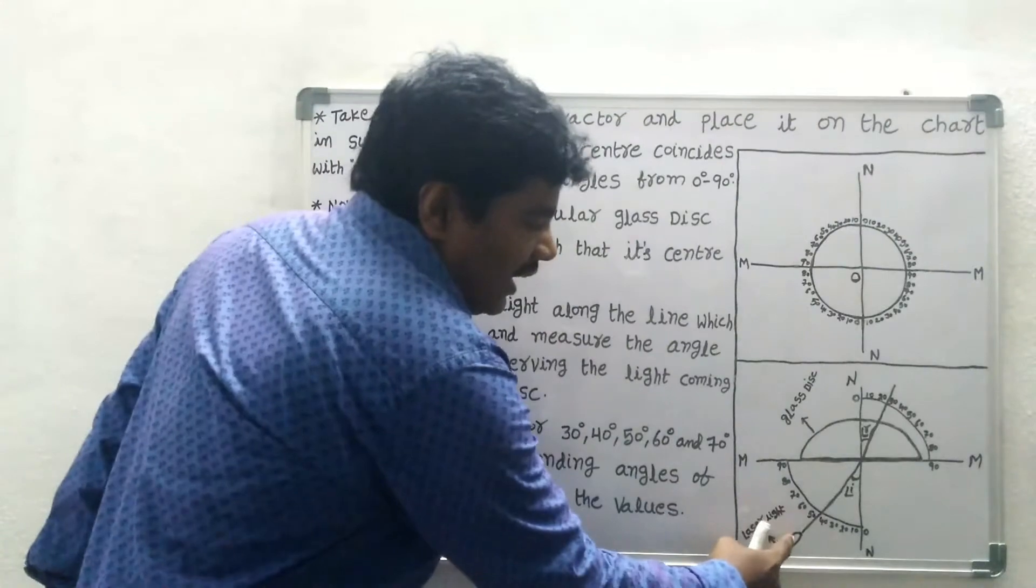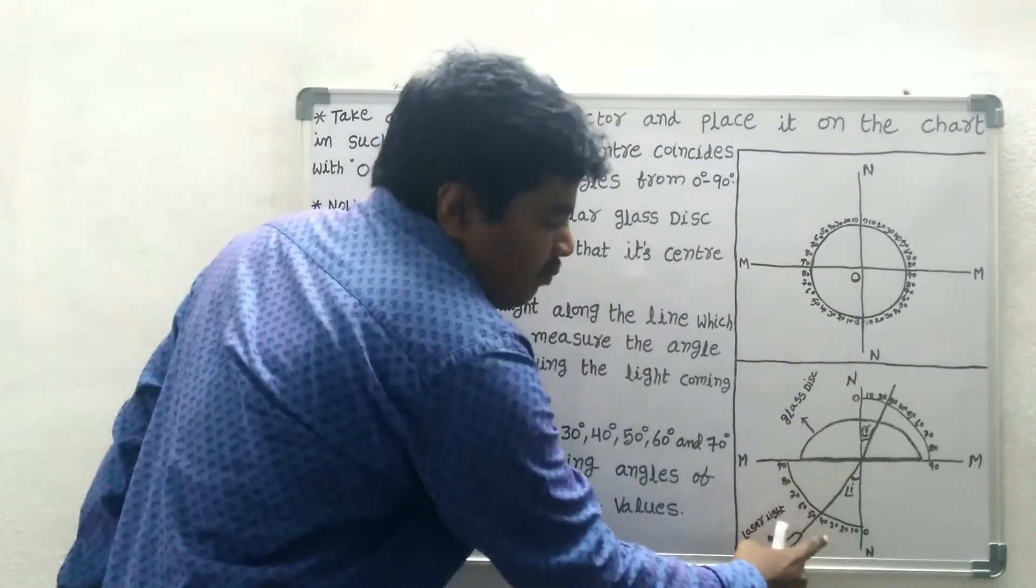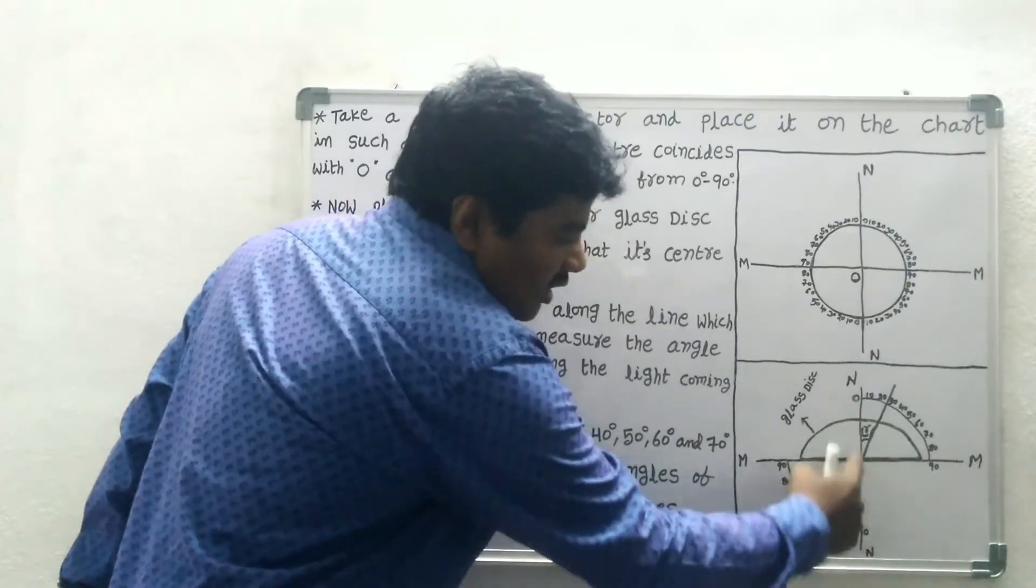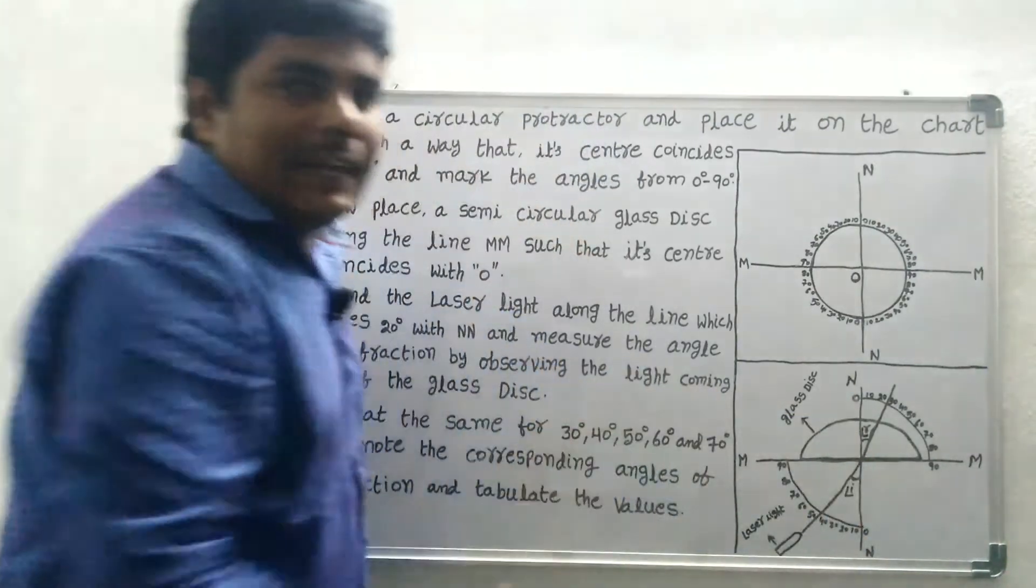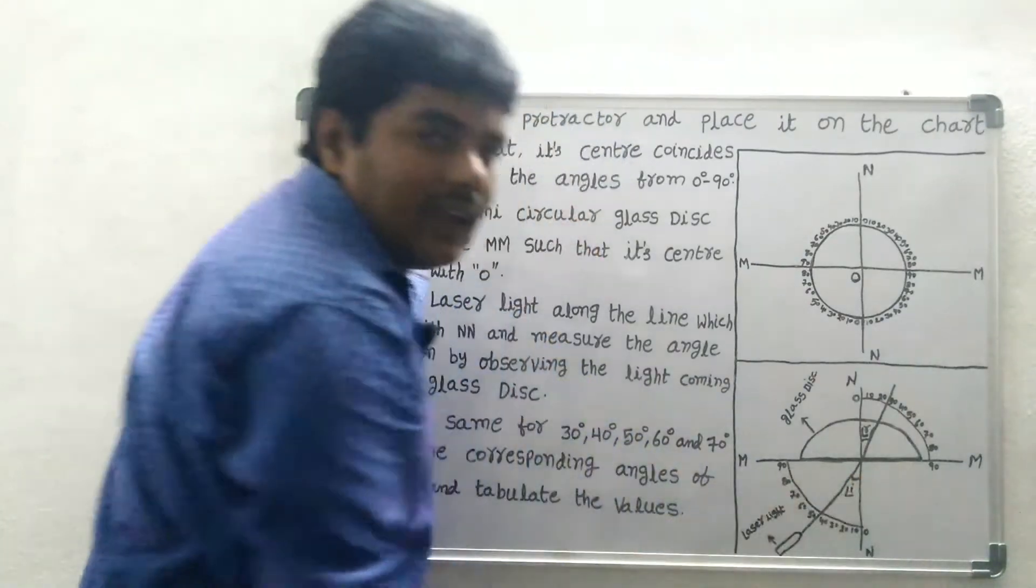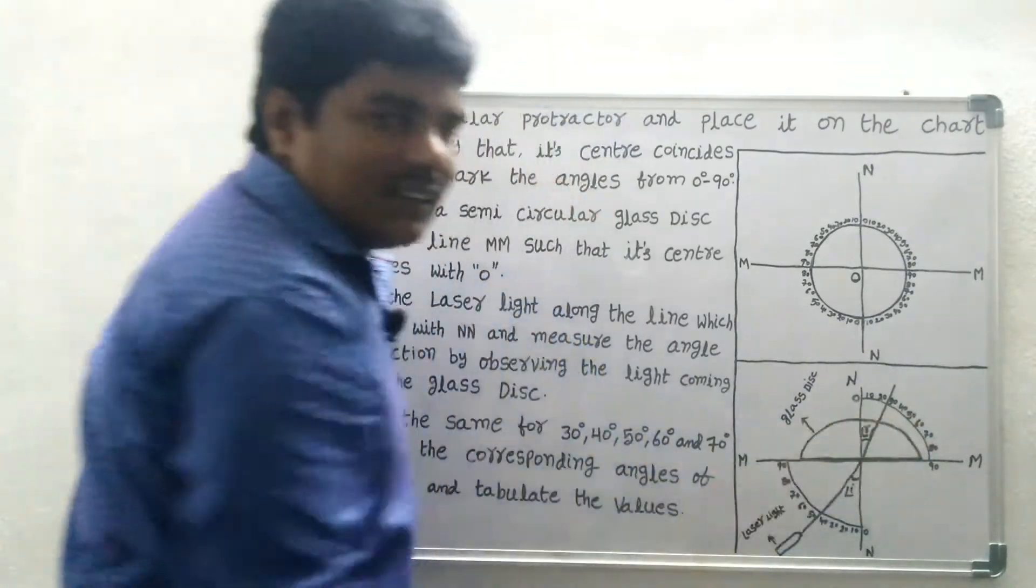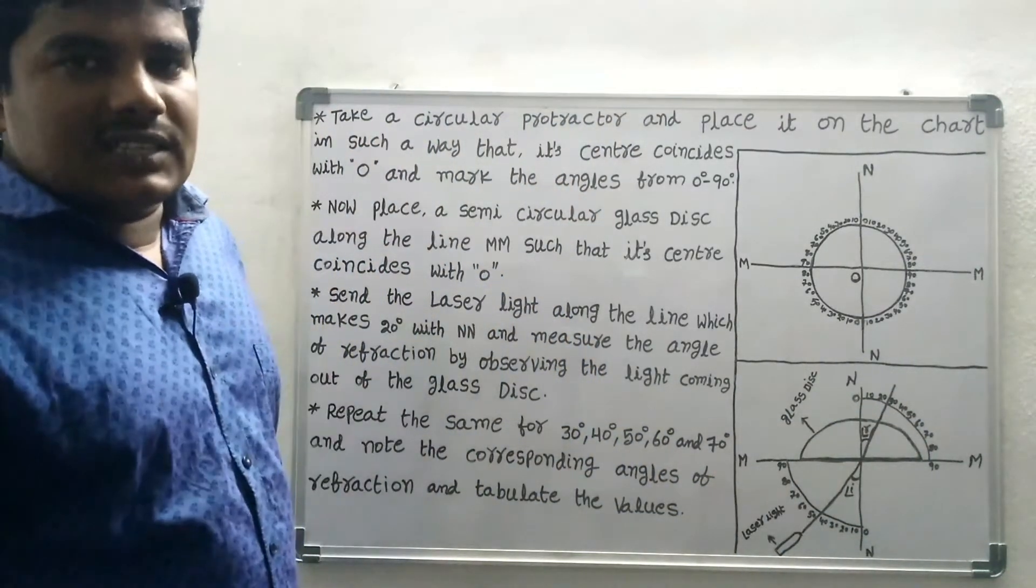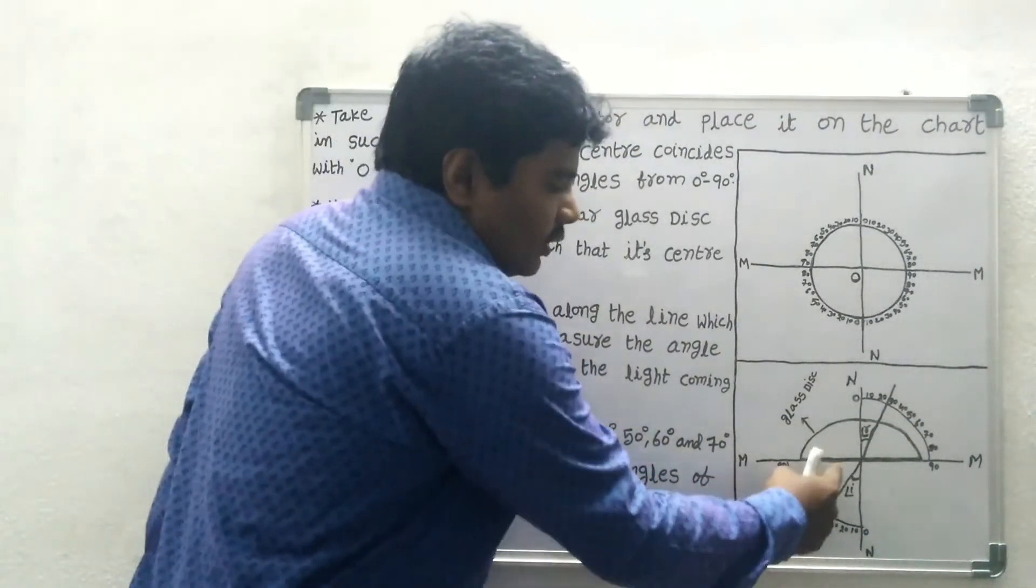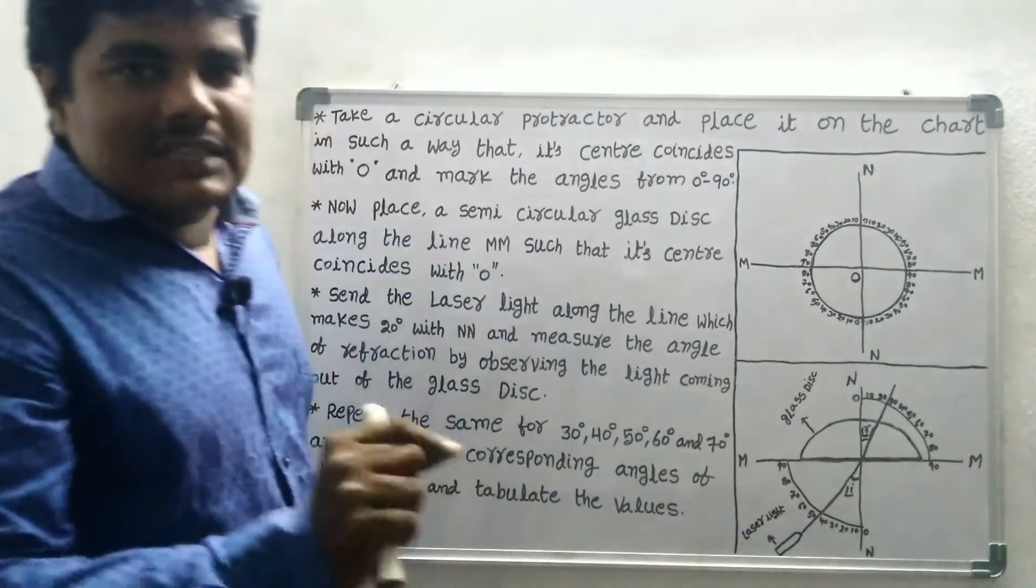Send a laser light along the line which makes 20 degrees with the line NN. This is air. Air means rarer medium and this is glass disk, which means denser medium. So the light is traveling from rarer medium to denser medium.